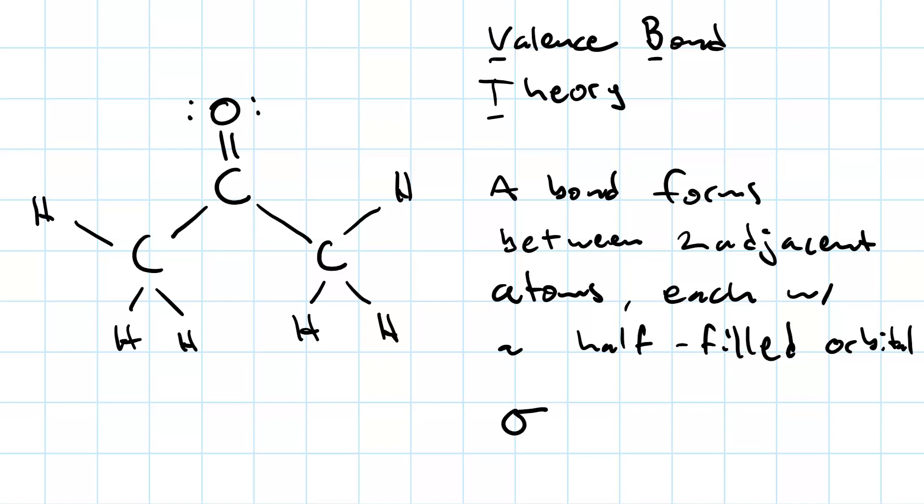Sigma bonds generally form from hybrid orbitals, and pi bonds form from side-on overlap of p orbitals.